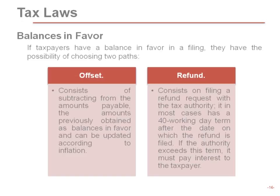If it turns out the government owes you money, you can recover it one of two ways: offset or refund. Offsets are preferred because the government doesn't have to approve them. You tell the government: I owe you 100 pesos and you owe me 50 pesos in value-added tax — I'll only pay you the net of the two, getting immediate cash benefit. The government can only audit you if they don't like what you're doing.